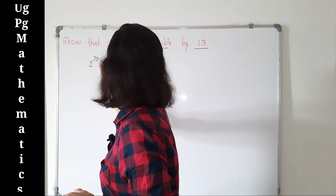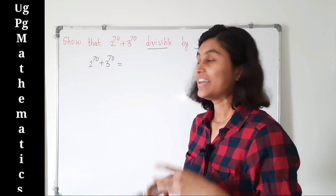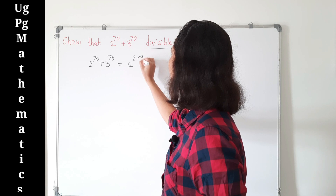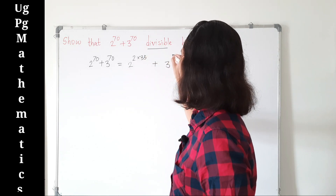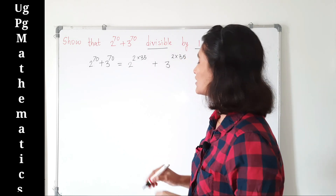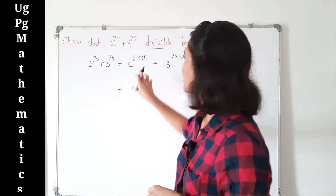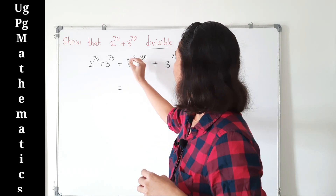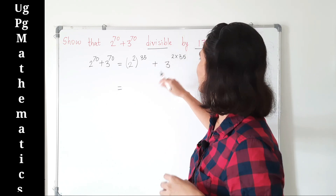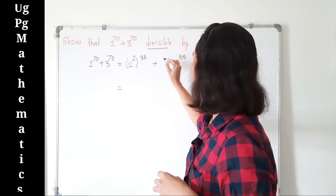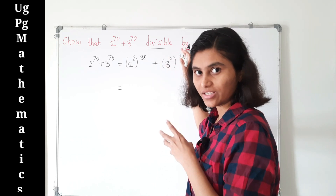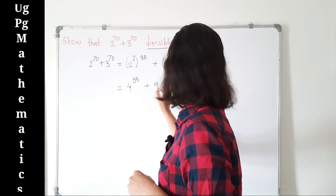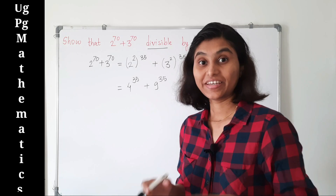What is the trick? We can write 2 raised to 70 plus 3 raised to 70 as follows: since 70 is 2 times 35, we get 2 raised to 2 times 35 plus 3 raised to 2 times 35. Using exponent rules, this becomes 2 squared raised to 35 plus 3 squared raised to 35, which is just 4 raised to 35 plus 9 raised to 35.